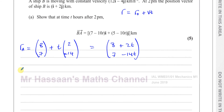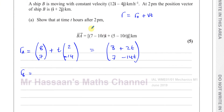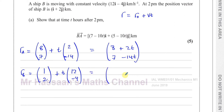The position vector of B, which we'll call R_B, is given by its initial position i + 2j, written as (1, 2), plus time t times its velocity vector 12i − 4j, written as (12, −4). Combining, the i component is 1 + 12t and the j component is 2 − 4t. That is the position vector of B at time t.